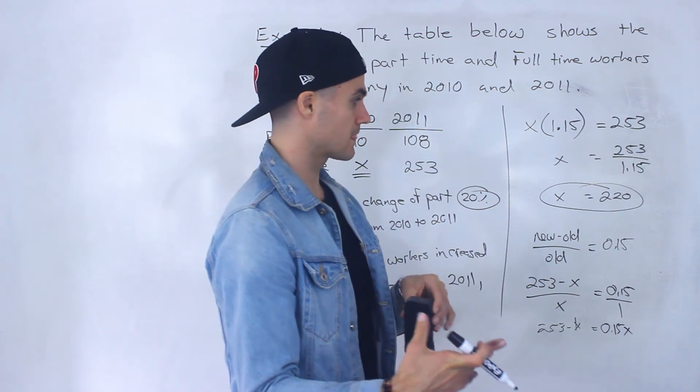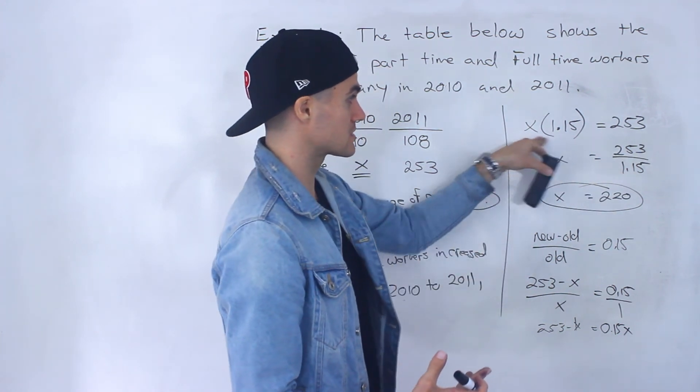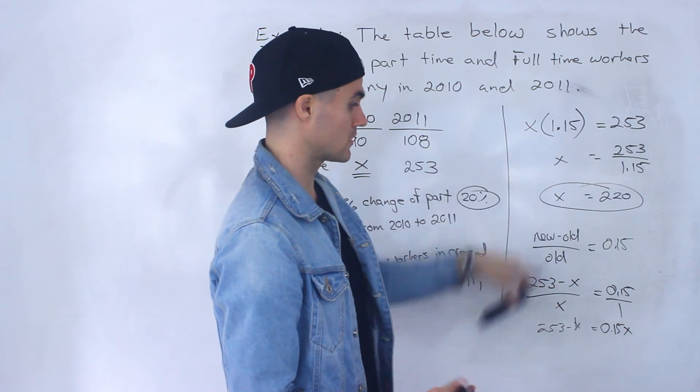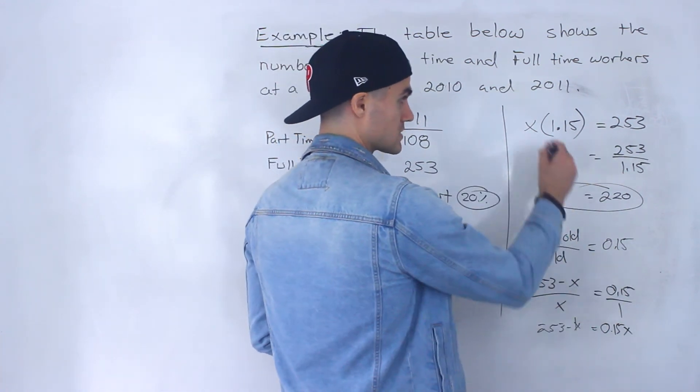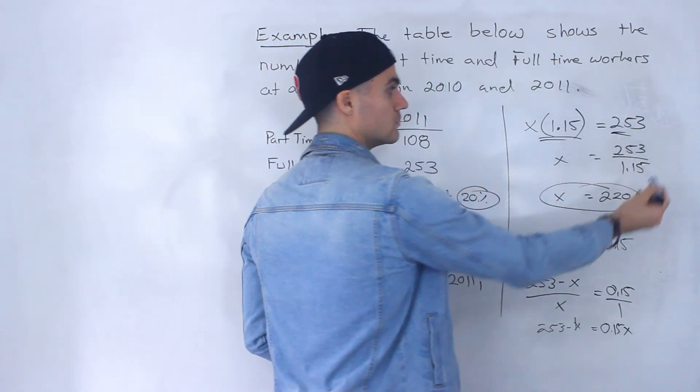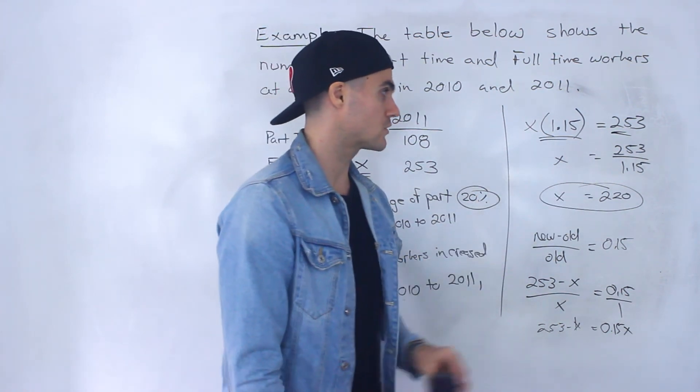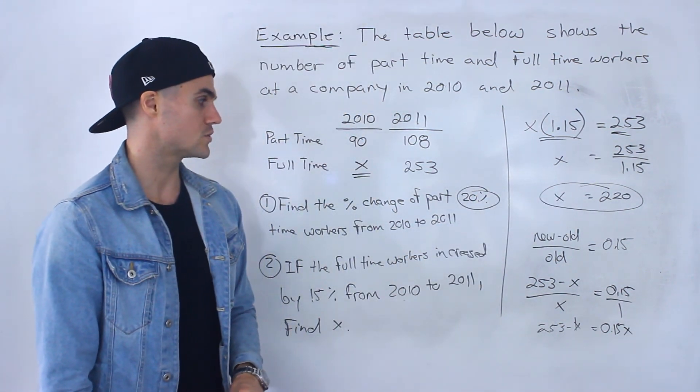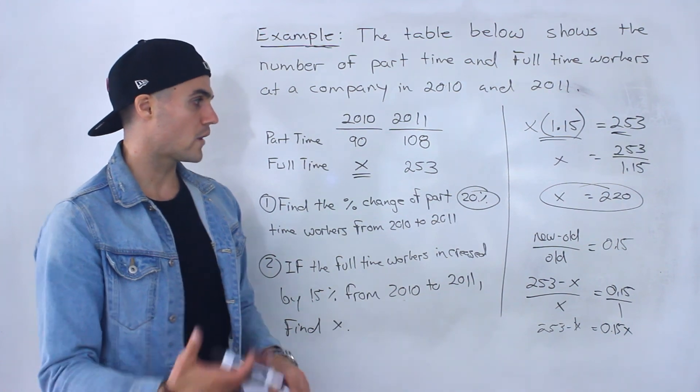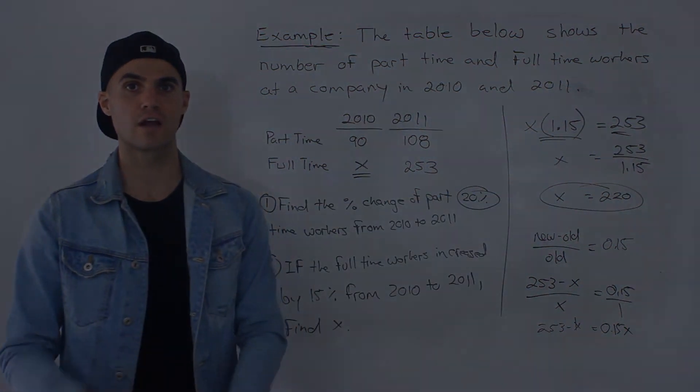So with all this we would just end up getting to that equation right there, and then x would just be 253 divided by 1.15 which is 220. So whichever way you do it, that's your final answer.